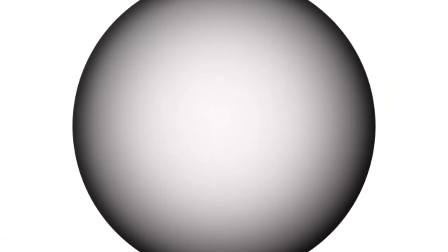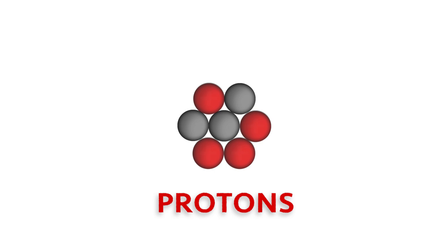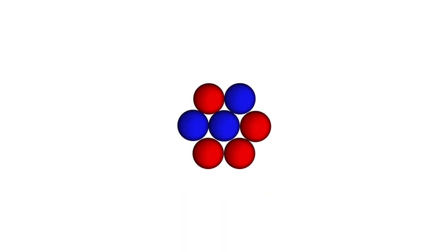The nucleus contains most of the mass of an atom but is a tiny fraction of the volume. The nucleus is made of individual particles called protons and neutrons. Protons have a positive charge and neutrons have no charge at all.